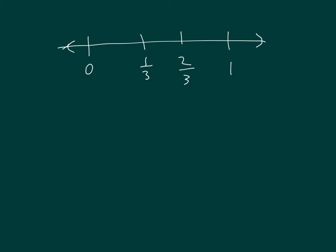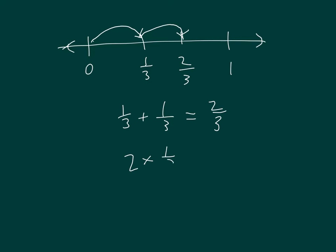Let me show the addition sentence 1 third plus 1 third. So I start at 0, and I add a third, add another third, and I see that 1 third plus 1 third is equal to 2 thirds. I'm also going to express that as a multiplication sentence, where it's 2 times 1 third equals 2 thirds.